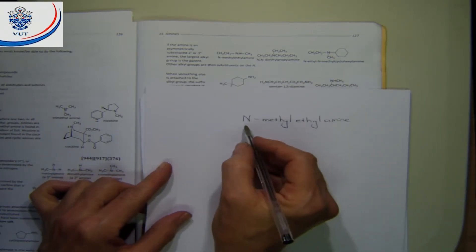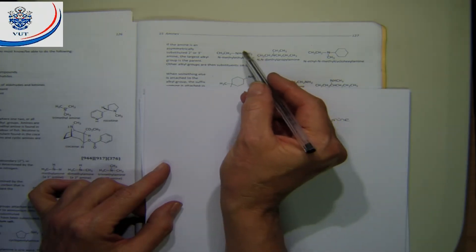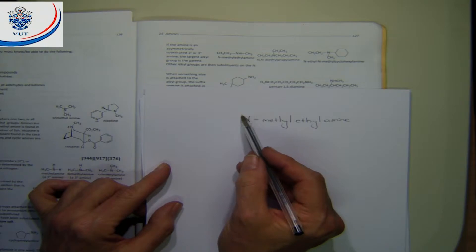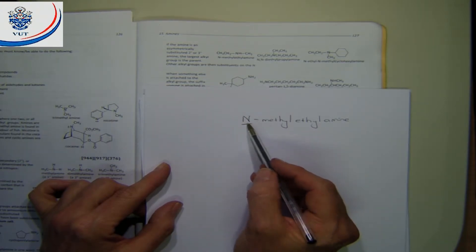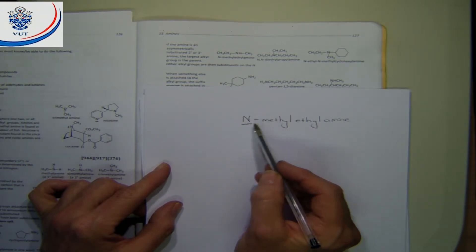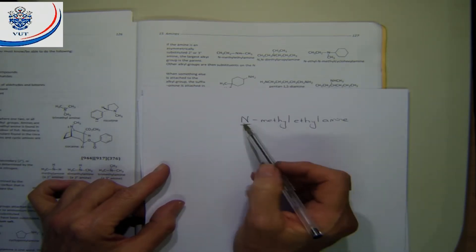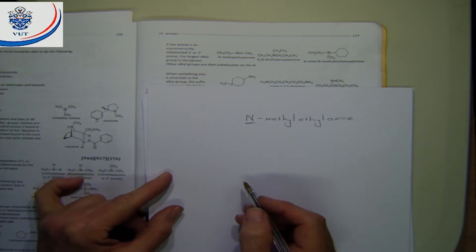There is also a difference from what we have done before. In the case of the amine, if there is a substituent on the nitrogen, we make use of the letter N to indicate that on the nitrogen you have a methyl group substituting one of the H's. So we are going to make use of that way to refer to nitrogen substituents.